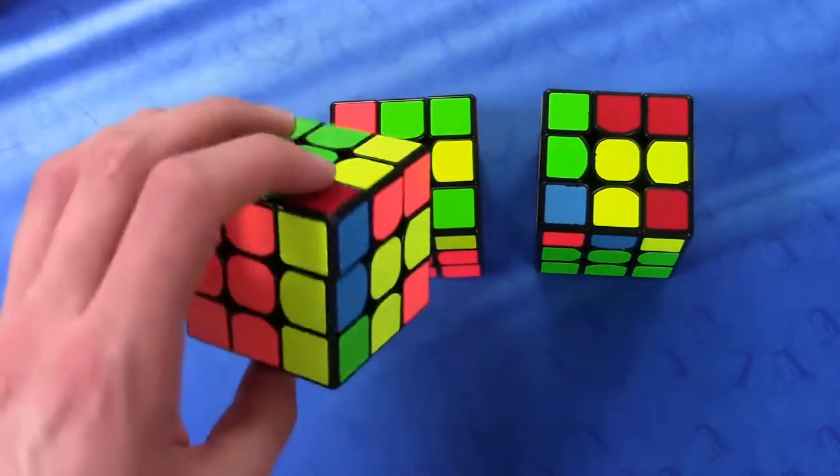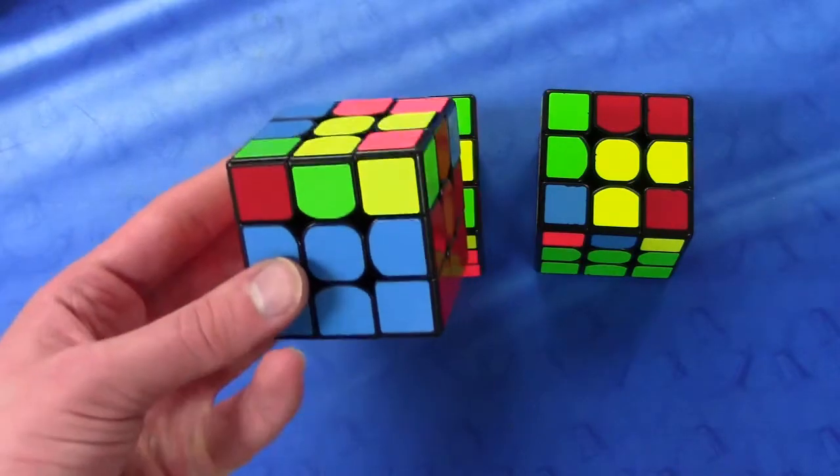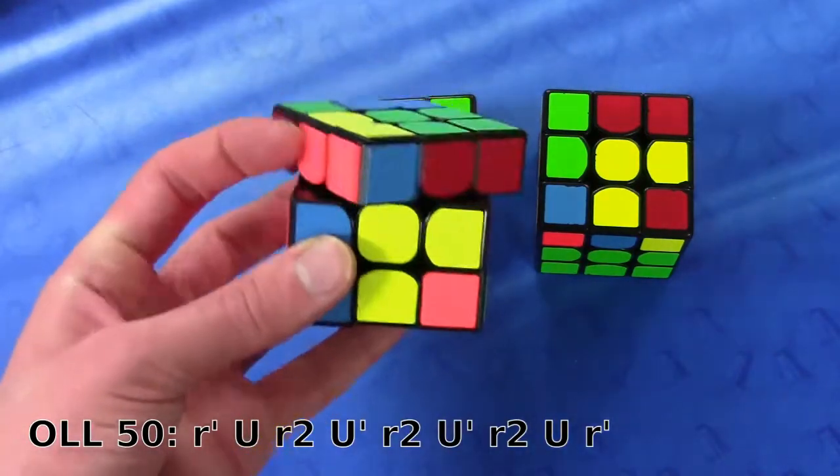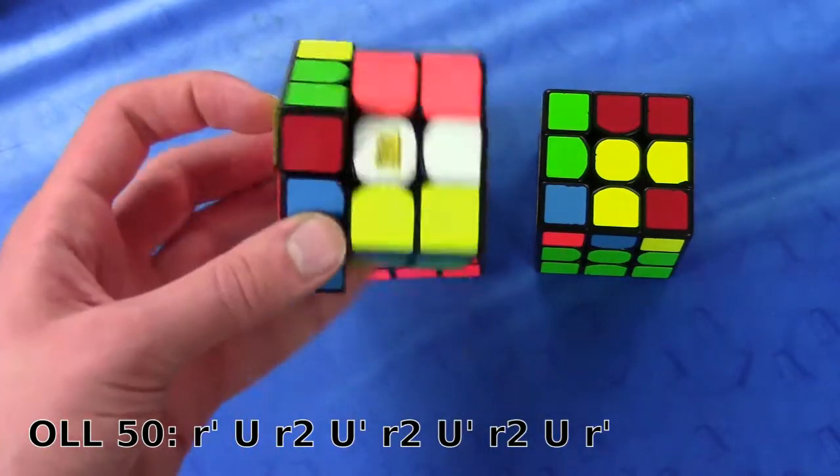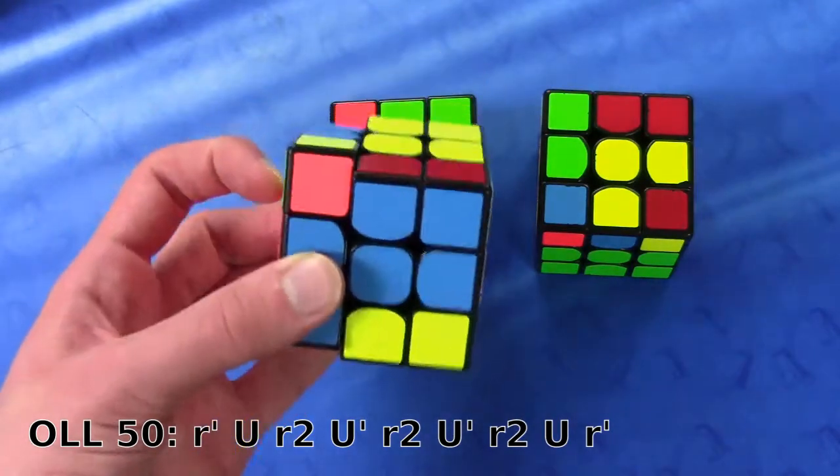This algorithm is exactly the inverse of the previous one I showed and is pretty much just as easy, except for the fact that it has R' at the beginning instead of R's, which I suppose is a tiny bit trickier.